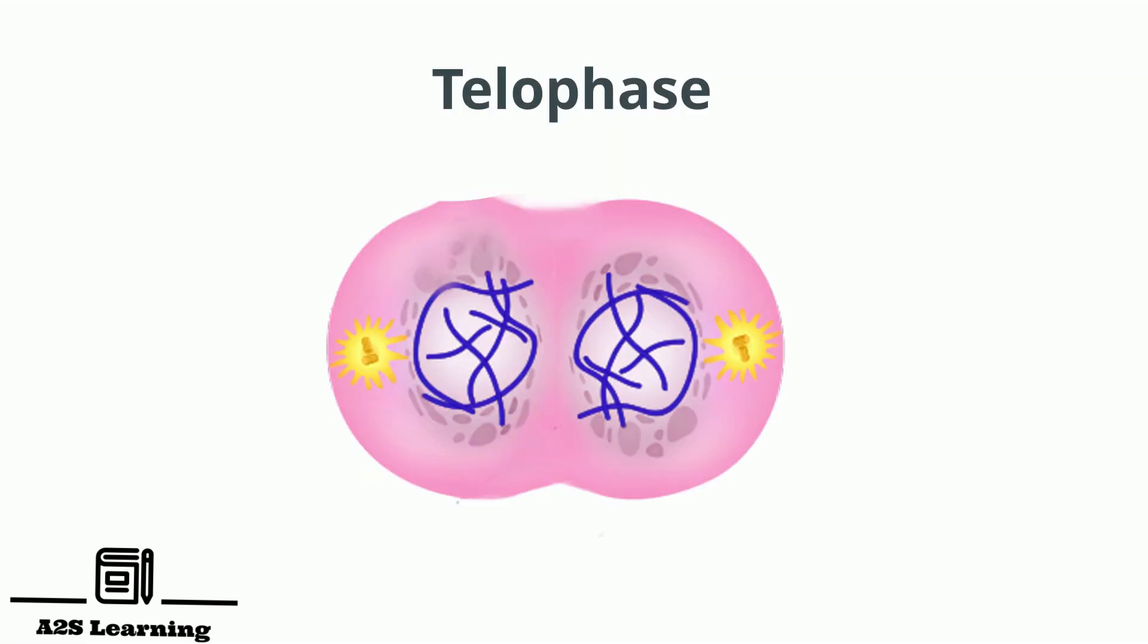Telophase is the final stage of karyokinesis, which begins after chromosomal movement stops. The identical sets of chromosomes now at opposite poles of the cell coil and revert to the thread-like chromatin fiber. Nuclear envelope develops around the chromosome clusters at each pole forming two daughter nuclei and nucleolus reappears.